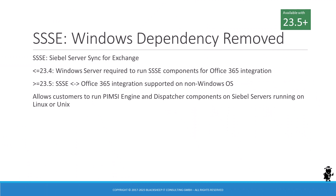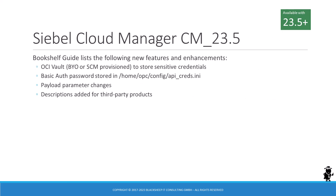If your organization is using the Siebel Server Synchronization for Exchange, now Office 365, make sure to check out the respective information in Siebel Bookshelf. With 23.5 and higher, the dependency on Microsoft Windows Server to run the SSSE-specific components has been removed, allowing organizations with a preference for Linux or Unix to use their preferred operating system for SSSE. The 23.5 release of Siebel Cloud Manager (SCM) also includes some interesting updates as documented in the respective Bookshelf guide.